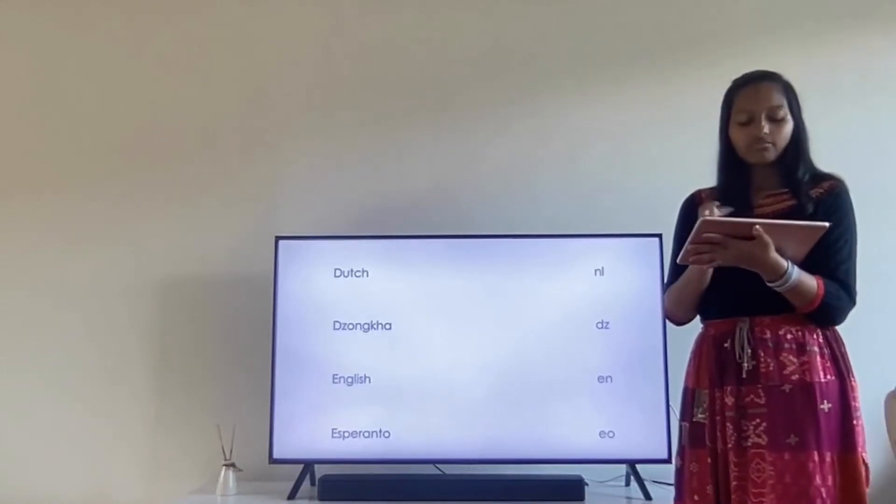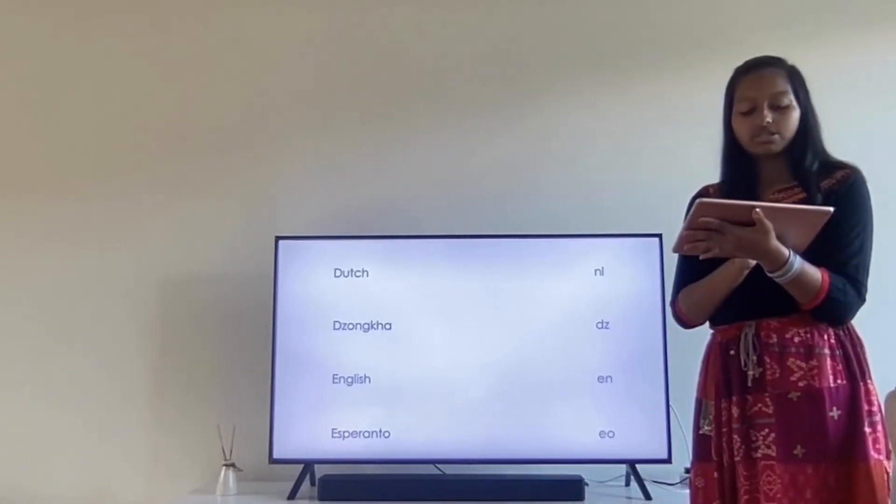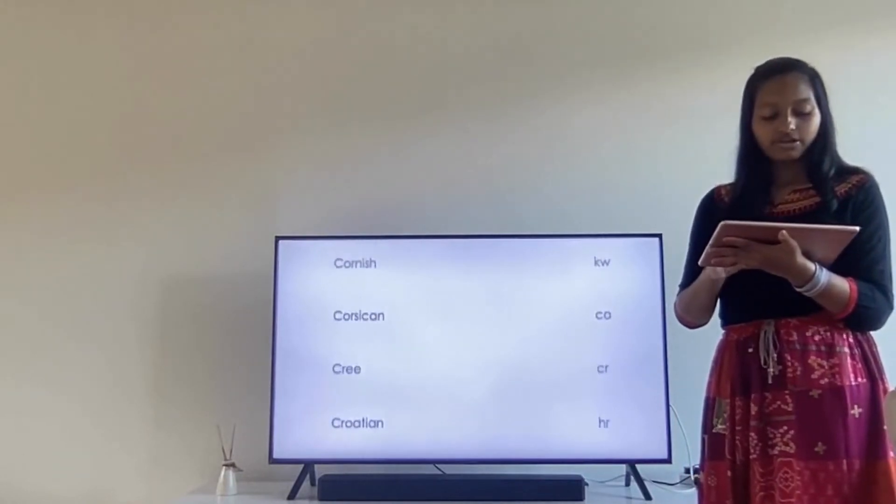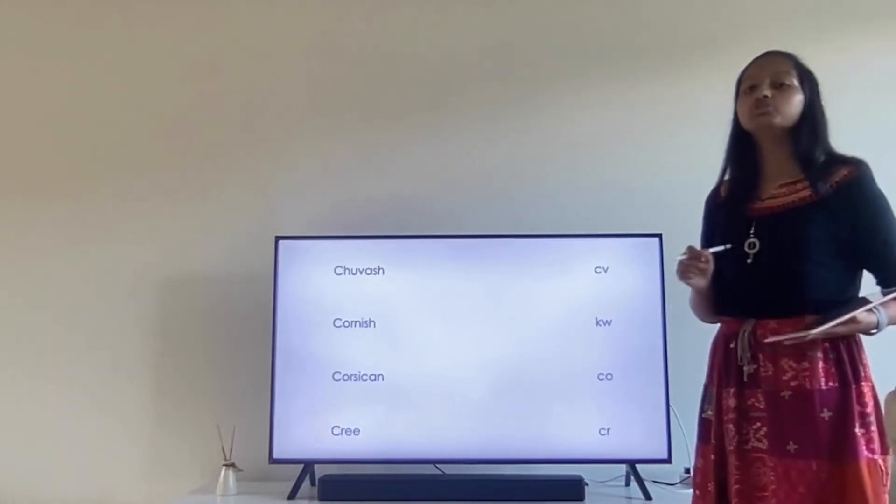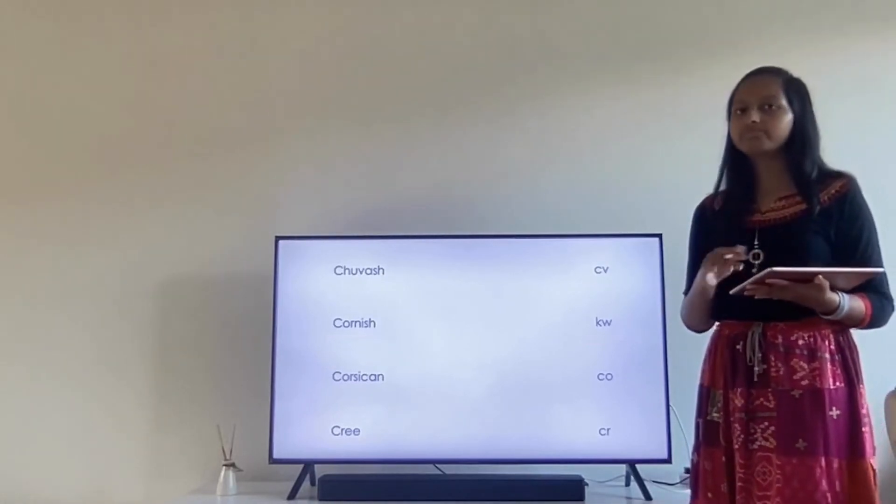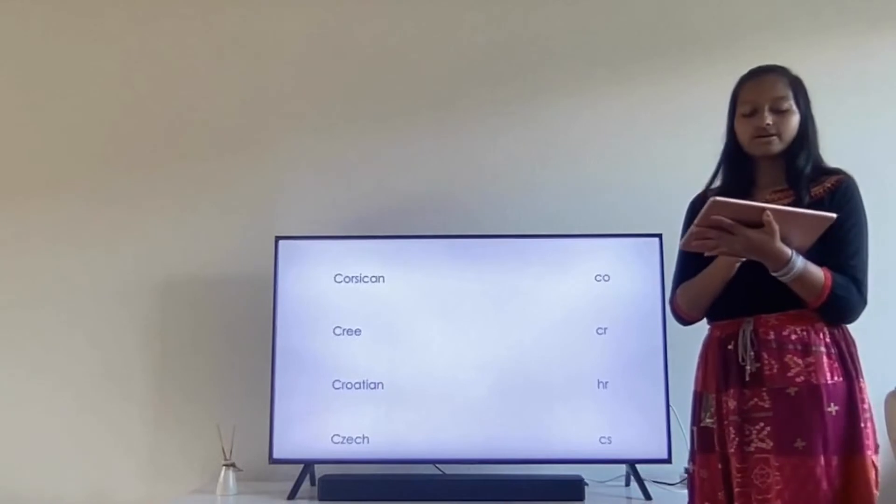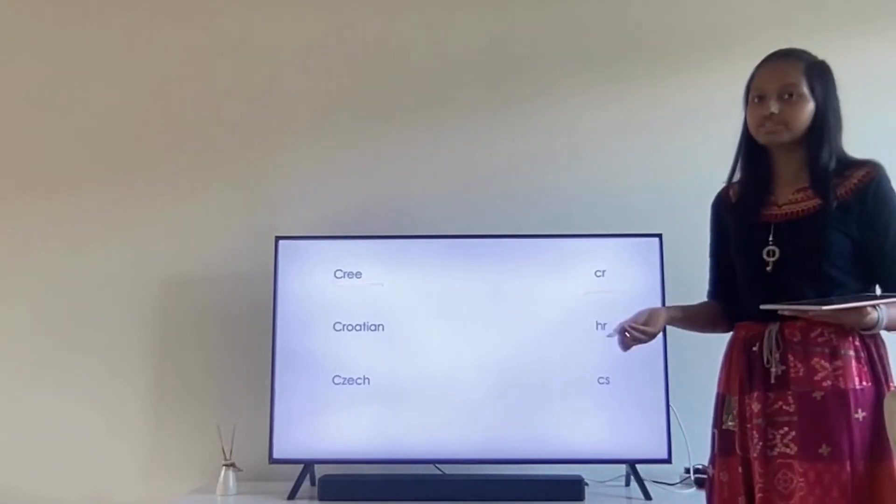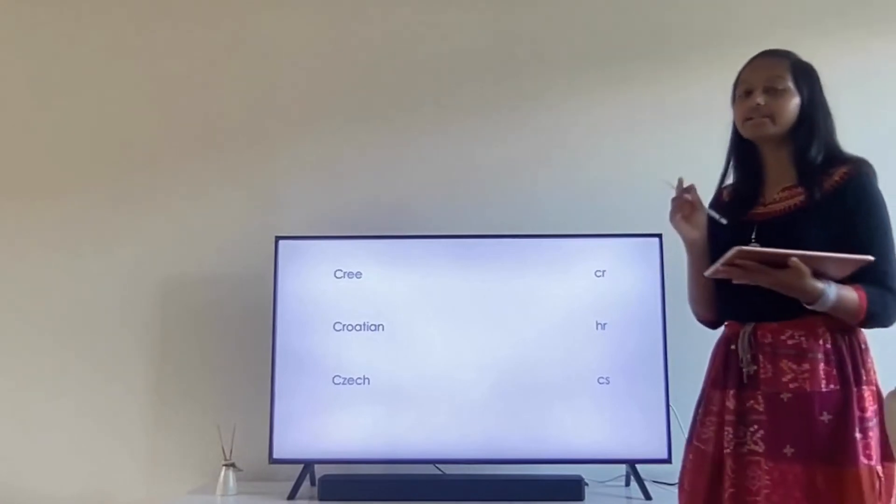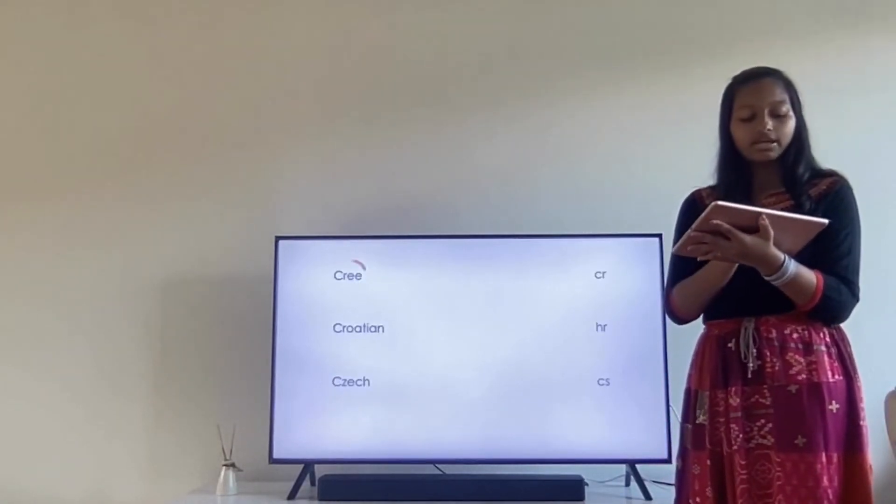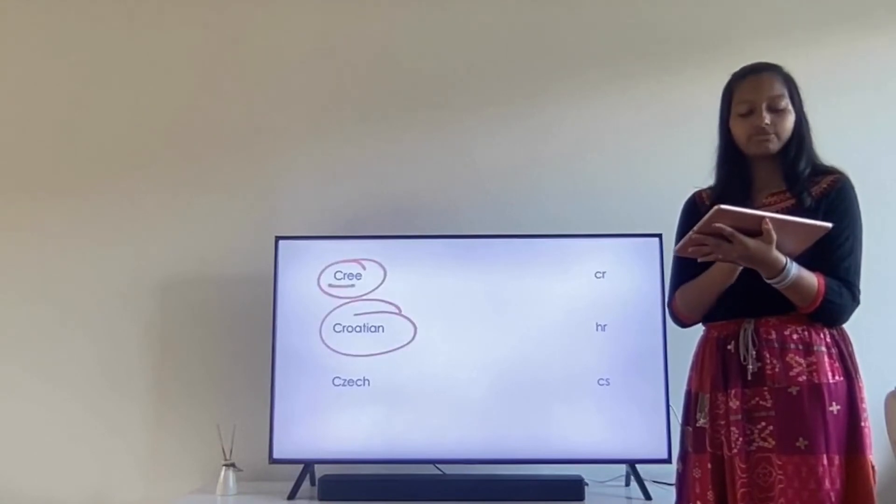Okay, then the last language of this video which is Dzongkha is DZ. So let's revise from the start. Chuvash CV, Cornish KW, completely different isn't it? Corsican CO. Cree CR. As I told you, the first two initial letters of that language. Croatian HR. Now as you see, Cree and Croatian have the same two initial letters, thus it cannot have the same language code.